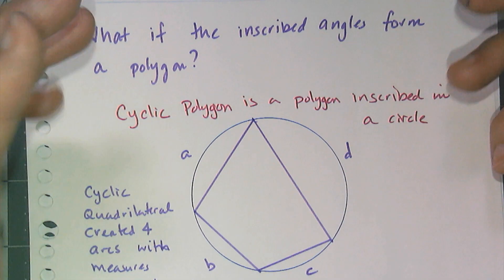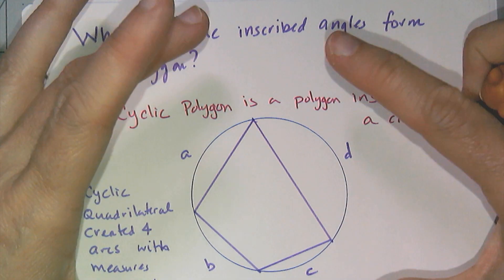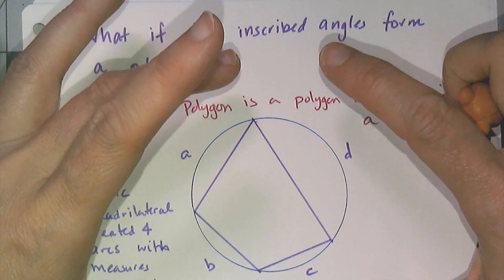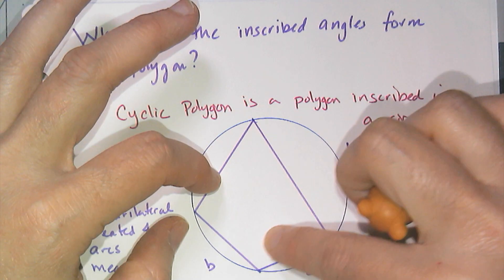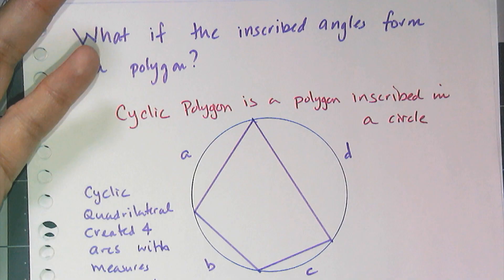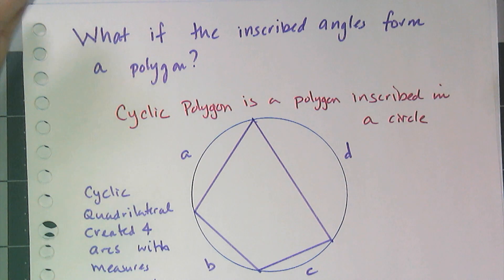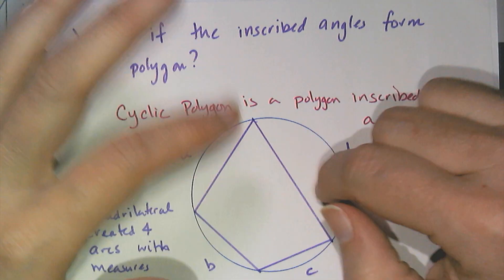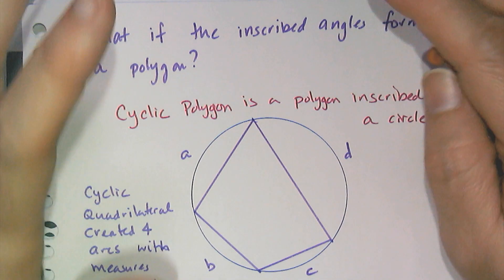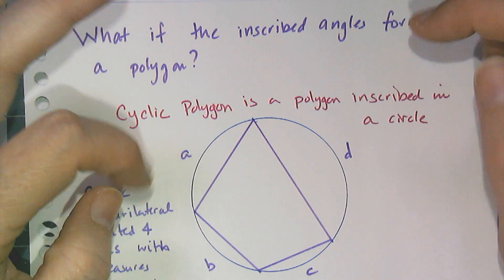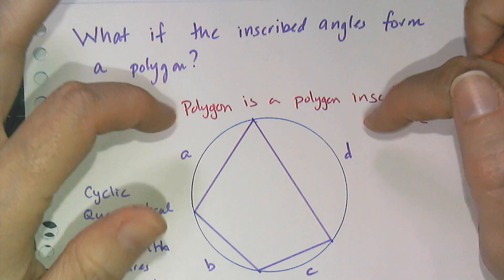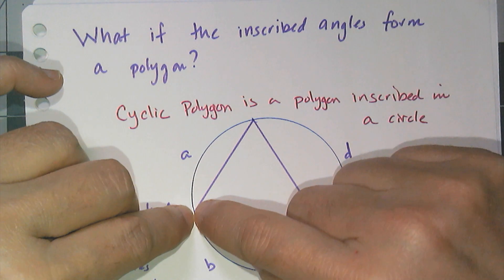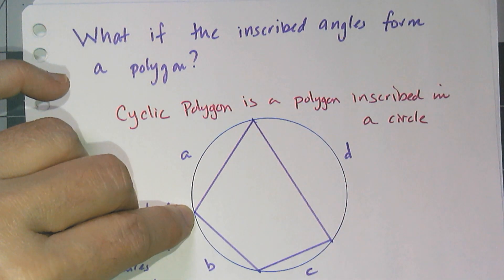And so when you get a problem that has this kind of diagram where you see a polygon, in this case a quadrilateral, your brain focuses on the polygon because you're more comfortable with polygons. You've worked with them for a very long time, especially the quadrilateral. And if you had to find angle measures, you're going to focus on, oh, is it a rhombus or a parallelogram or whatever, trapezoids. But what's important for a cyclic polygon is to notice the arcs that are formed by the vertices of the polygon.